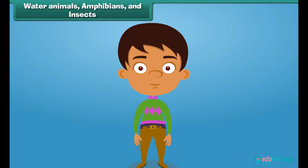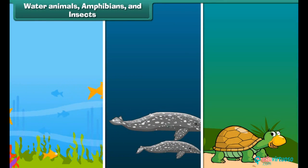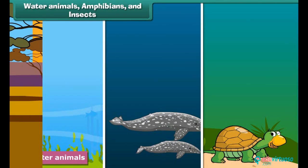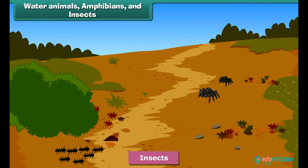The animals that live in water are called water animals — fish, whale and tortoise are a few examples. There are some animals that can live both on land and in water; these are called amphibians. For example, frogs and snakes. Insects crawl on the ground or other supports — for example, spiders and ants. Some insects can fly also.